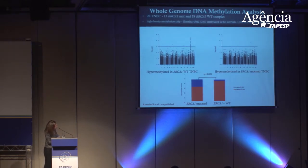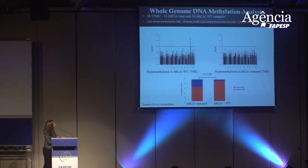We also performed whole-genome DNA methylation analysis in both groups. We observed that triple negative without BRCA1 mutation has higher levels of hypermethylated CpG promoters. We also found a peak of hypermethylation in the region of chromosome 17 where BRCA1 is located. We are currently investigating whether these BRCA1 wild-type tumors truly have hypermethylated BRCA1, as hypermethylation is correlated with gene silencing, suggesting BRCA1 is at least lower expressed in this group.